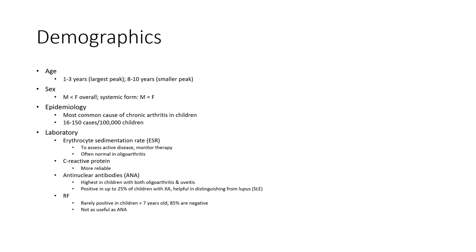Demographics: a first peak at 1–3 years, largest peak at 8–10 years, and a smaller peak. Predominantly female overall, with the systemic form showing equal male-to-female ratio. Epidemiology: the most common cause of chronic arthritis in children, 16 to 150 cases per 100,000 children.